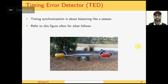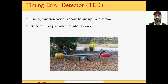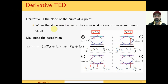Before we move on to the discussion on timing error detectors, always refer to this figure which is a seesaw near my home. Timing synchronization is always about balancing the seesaw — if one side goes down and one is up, we need to bring it down so that they again come to a balance. Start with the derivative TED timing error detector.